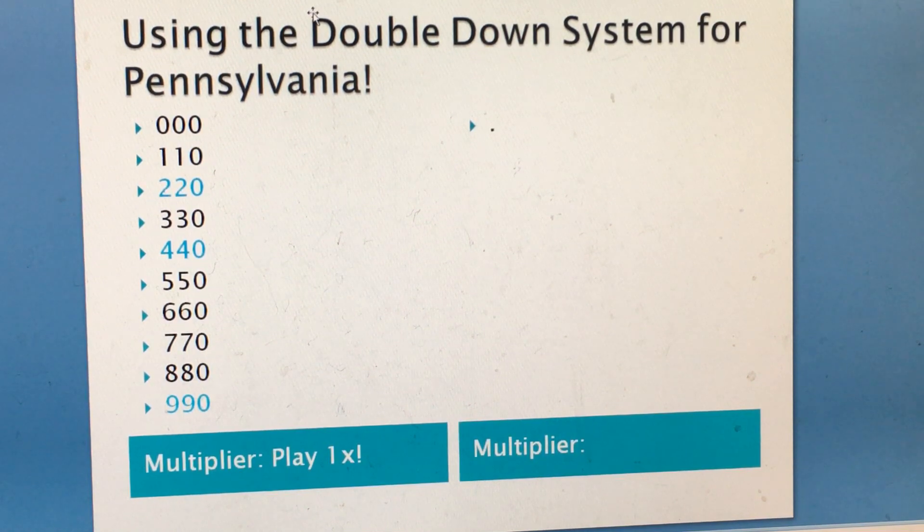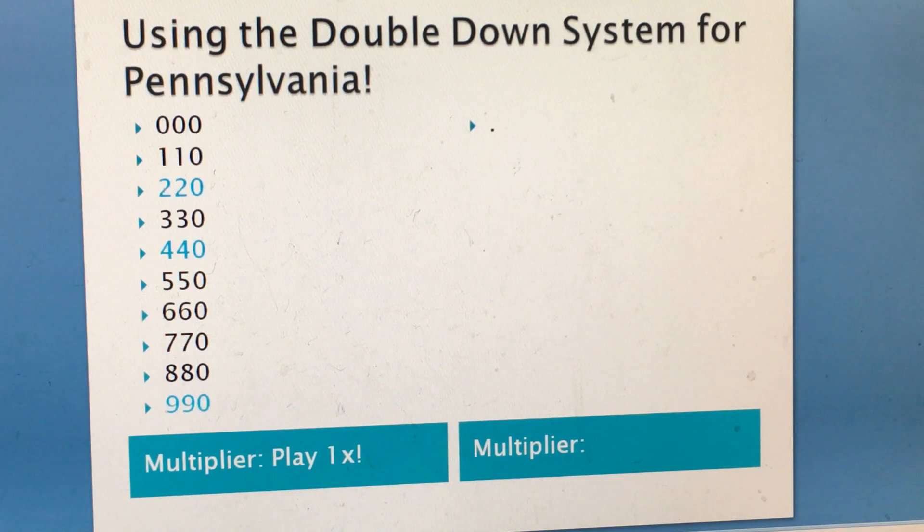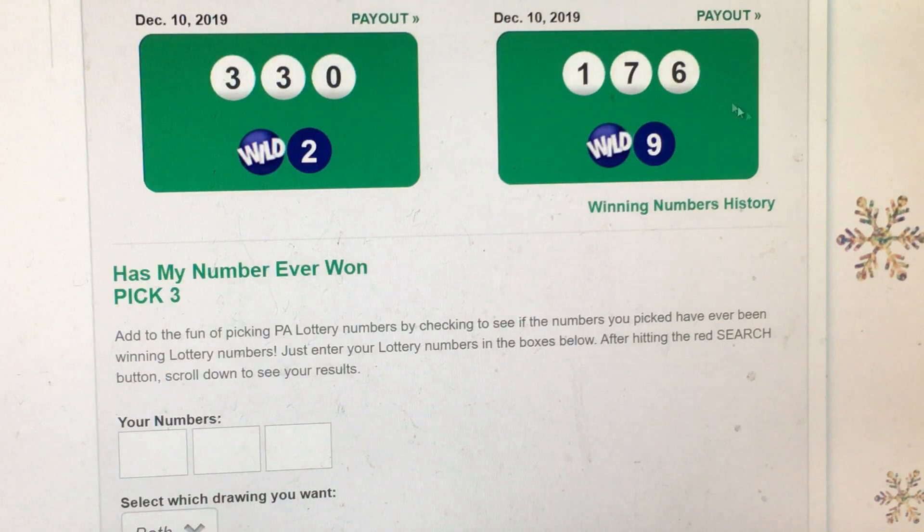One hit, one multiplier I mean. Now, let's go back to that. And I think 330 came up for Pennsylvania day, December 10th. So it's a week of prediction. It came up two times on that set.